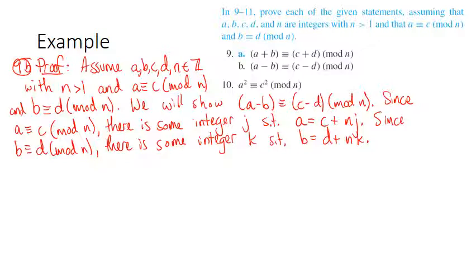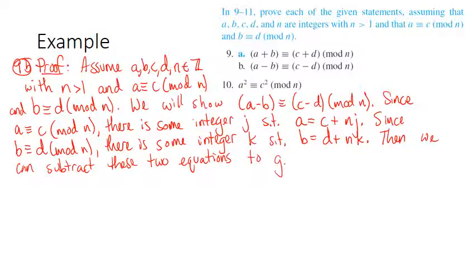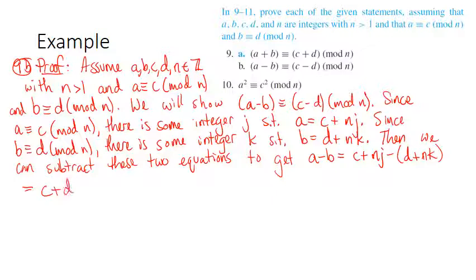Now that I've translated my congruences into equations, I can use what I know about equations — you can subtract them. Subtracting the two equations gives (a minus b) equals (c minus d) plus n·j minus n·k, which simplifies to (c minus d) plus n times (j minus k). Since j minus k is an integer, this means a minus b is congruent to c minus d mod n.